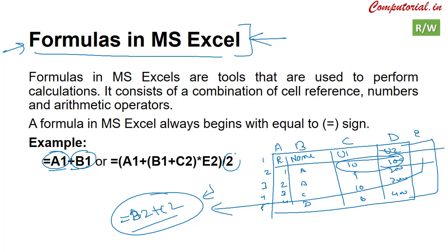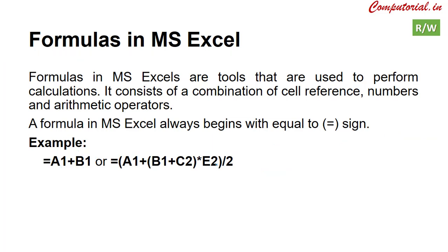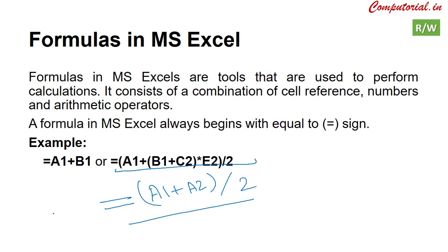These formulas are the most important tool for calculation in MS Excel. They use cell references, which are the addresses of cells. For example, to calculate average, the formula is sum of values divided by number of observations. We can include this formula in our sheet. We need to understand this topic practically.